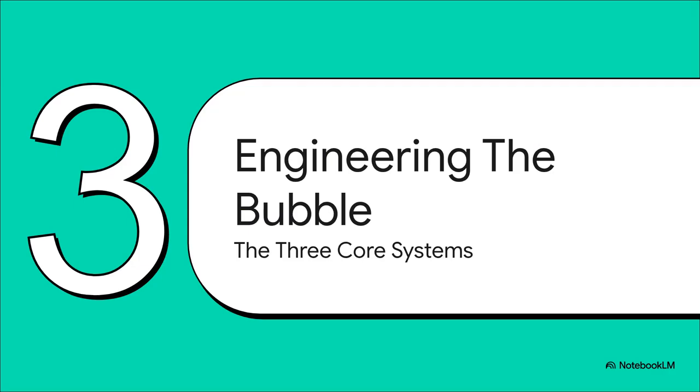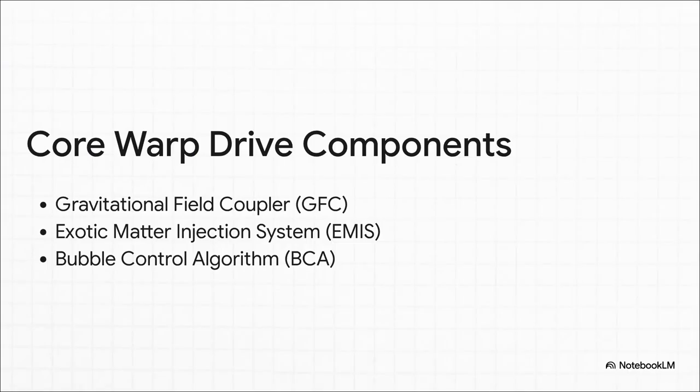So, we've got the mind-bending theory. We've got our exotic ingredients. Now let's get into the nuts and bolts. How does this all come together in an actual machine? The blueprint shows that the whole drive really boils down to three core critical systems working together. Yep, it all comes down to these three things working in perfect harmony. You've got the GFC, which shapes the bubble, the EMIS, which fuels it with that crazy negative energy. And then you have the BCA, a super smart AI whose whole job is to make sure the entire thing doesn't just fly apart.